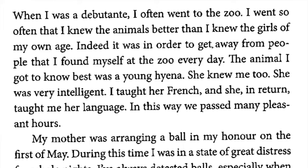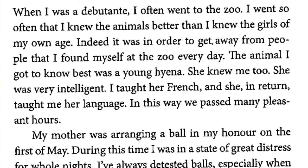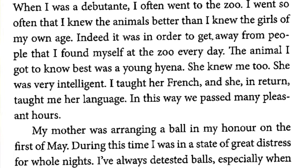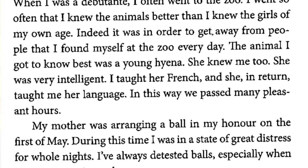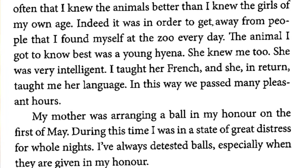So that's who Leonora Carrington was. We can of course see some similarities between Carrington and the narrator of The Debutant, but they're not the same person. So let's see what we can tell about this narrator from the way she tells her story. Like Mrs. Orlando, the narrator is afraid of something. What is she afraid of? "When I was a debutante," she writes, "I often went to the zoo. I went so often that I knew the animals better than I knew the girls of my own age. Indeed, it was in order to get away from people that I found myself at the zoo every day. The animal I got to know best was a young hyena. She knew me too. She was very intelligent. I taught her French, and she, in return, taught me her language. In this way, we passed many pleasant hours. My mother was arranging a ball in my honor on the 1st of May."